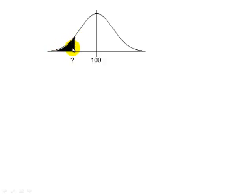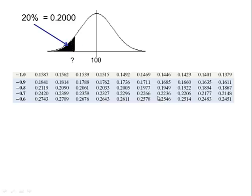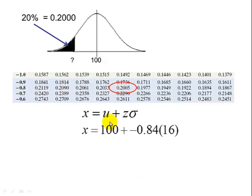Using table 5, we're going to find the closest thing to 0.2000. And if we look in the table, we see the closest is 0.2005. That corresponds to a z of negative 0.84. Substituting our values in the formula, mu is 100. Our z that corresponds to the bottom 20% is negative 0.84.